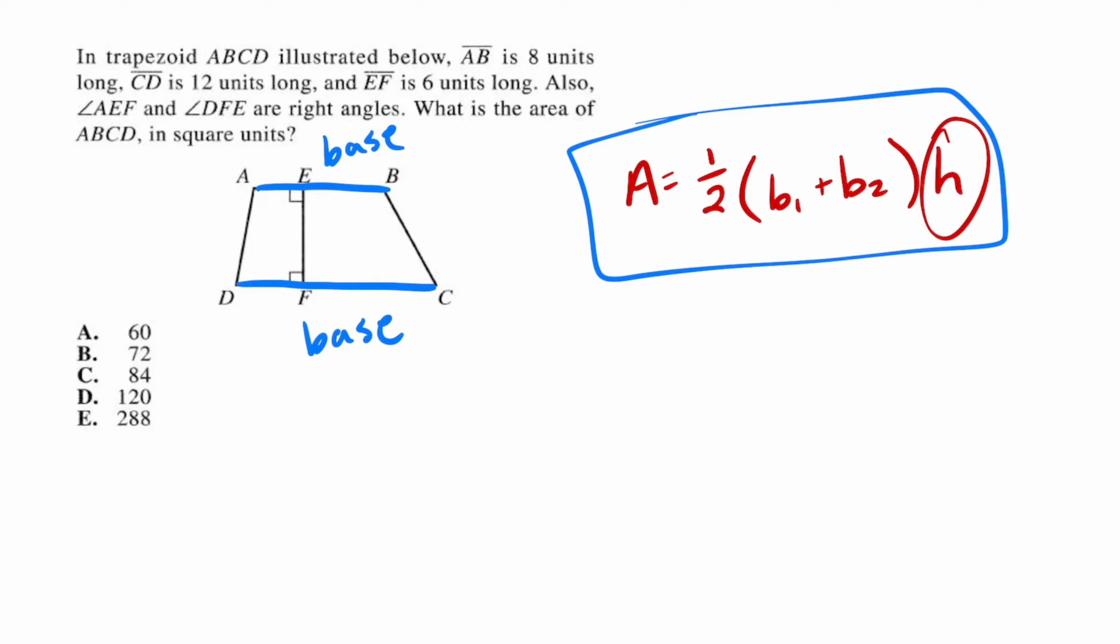And then the height, h, is a segment that connects the parallel sides and is perpendicular to them. The height can be drawn off to the side or in the middle like in this problem, but it's always perpendicular to the base - it forms a 90 degree angle with the bases.